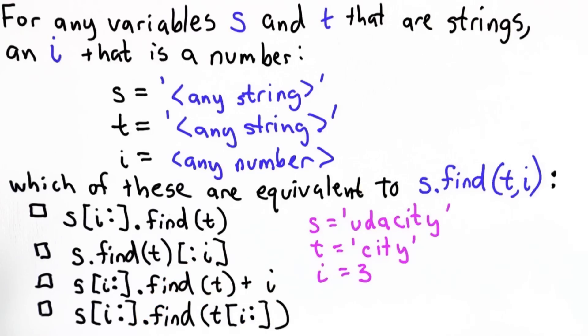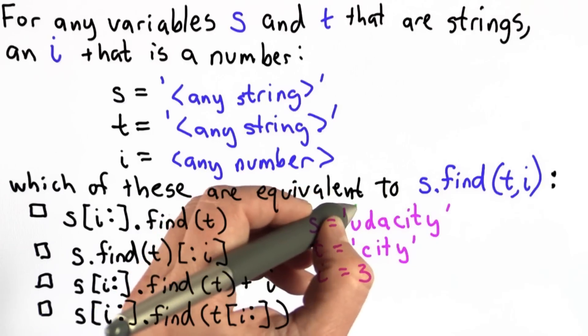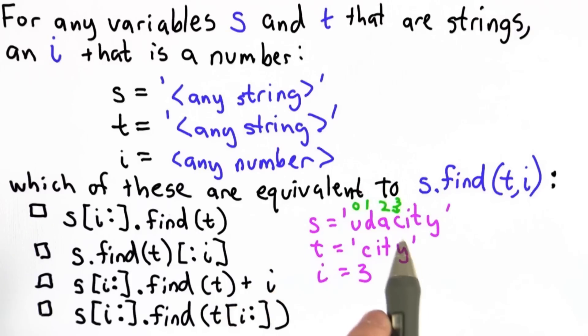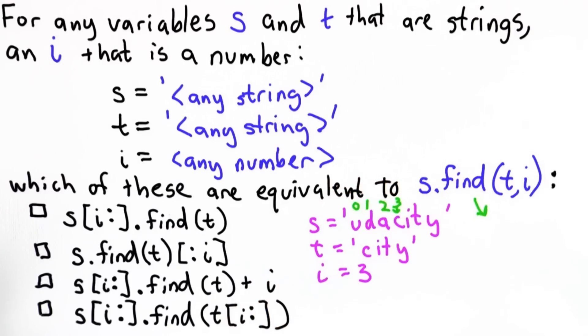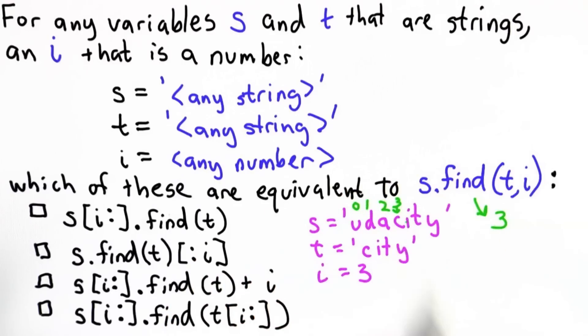So if we do s.find(t, i), what we're going to get, starting from position i, which is in s looking for city, we're going to find it right there. The output of s.find(t, i) with these variables is going to be 3. So it searches starting from position 3, but it's still going to give us the output where that's position 3. It gives us the output in terms of the positions in the original string s.